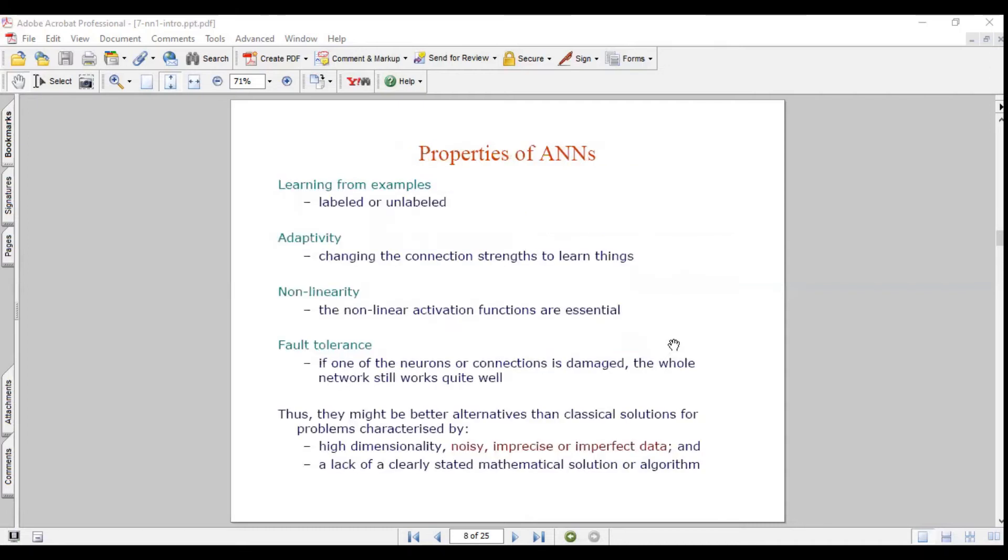What are the properties? Learning from examples is the first major one, labeled or unlabeled. By giving some labels of the example, we'll try to understand. Adaptability: changing the connection strengths to learn things. The non-linear activation functions are essential. If one of the neurons or connections is damaged, the whole network still works quite well. If one organ is not working, other organs also work. One neuron is damaged or not working, other neurons won't stop. Thus, they might be better alternatives than classical solutions for problems characterized by high dimensionality, noisy, imprecise or imperfect data, and a lack of a clearly stated mathematical solution or algorithm.